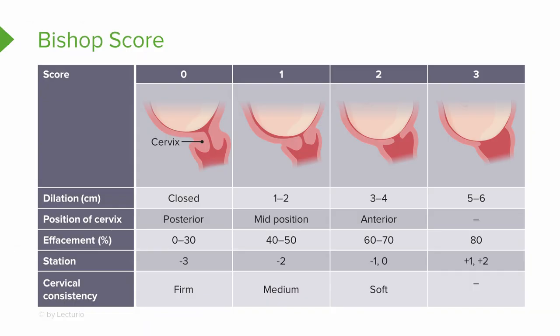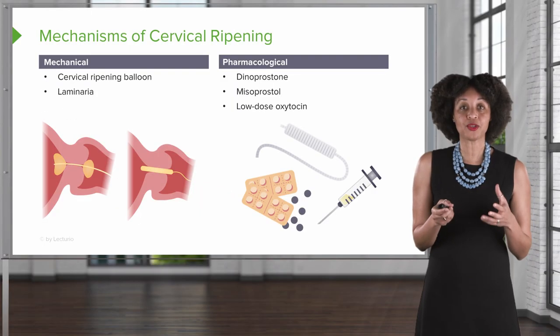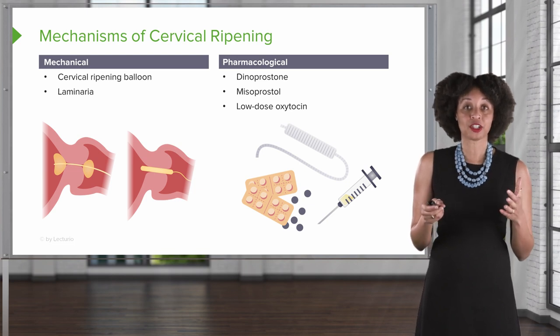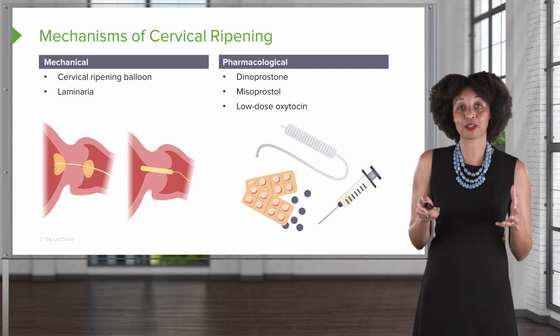Looking across the top of the chart you'll see numbers 0, 1, 2, and 3. Depending on how the client scores on that assessment, we add those numbers together to come up with a Bishop score. Remember, if it's someone who's had a baby before, a score less than 8 indicates the need for cervical ripening; for someone who's never had a baby, we use the number 10. Cervical ripening can be done mechanically using a device inserted into the cervix to physically push it open, or pharmacologically using medications such as dinoprostone, misoprostol, or low-dose oxytocin.